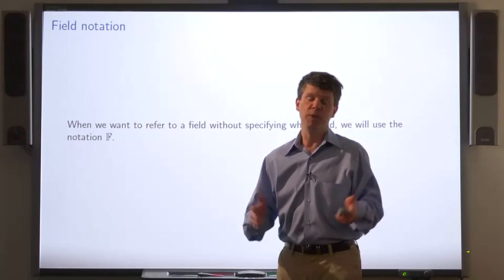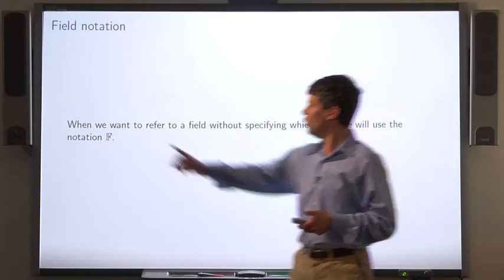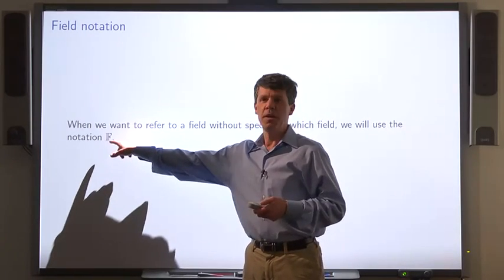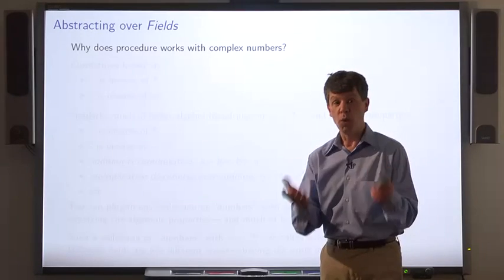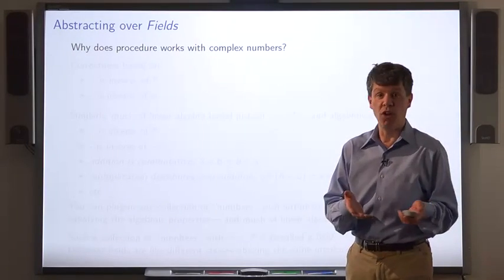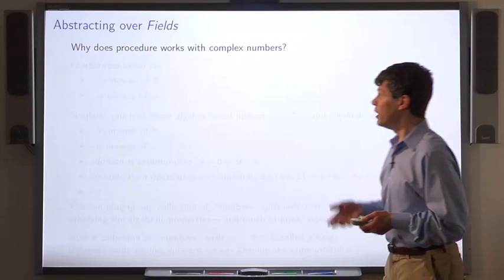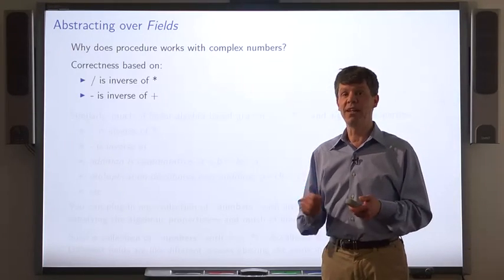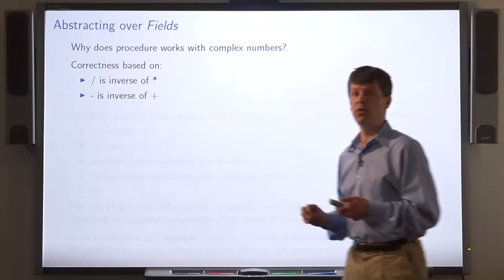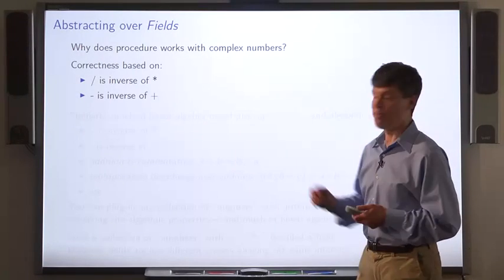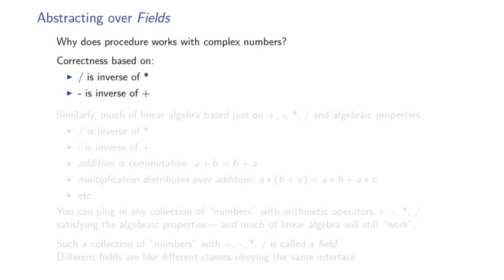When we want to refer to a field without specifying exactly which field, we'll use this notation with this blackboard f. So why does this procedure give the correct result for complex numbers as well as for real numbers? It's because it's just based on a few simple facts about the arithmetic operators. For example, division is the inverse of multiplication, subtraction is the inverse of addition.